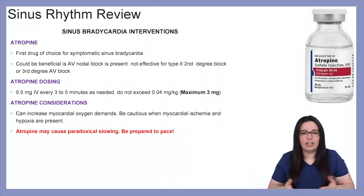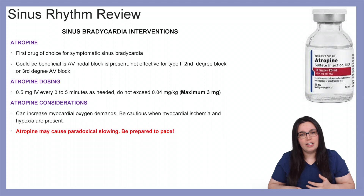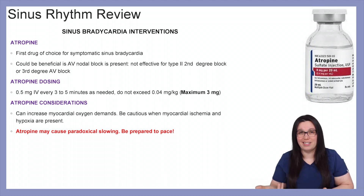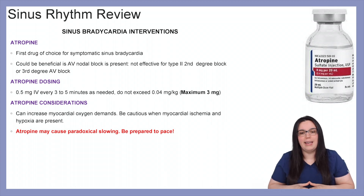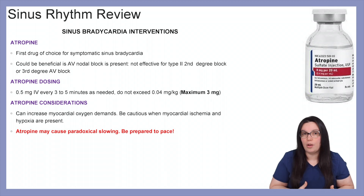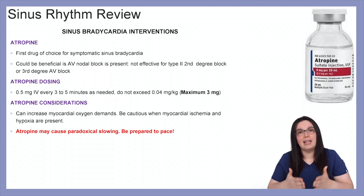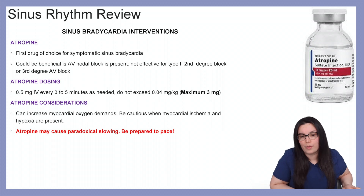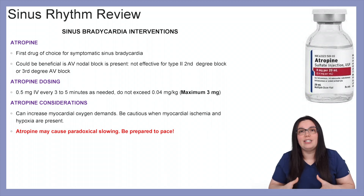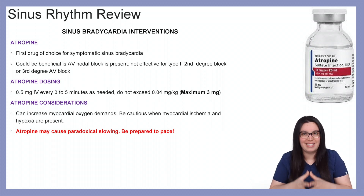Considerations for atropine: it can cause increased myocardial oxygen demand, so we have to be cautious if there is myocardial ischemia or hypoxia present when providing this to our patients. It's also important to note that atropine can cause paradoxical slowing — instead of bringing the heart rate up, it can actually make it worse and slow it down further. So we need to prepare to pace these patients in case that paradoxical slowing occurs.